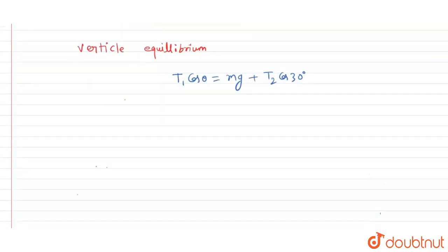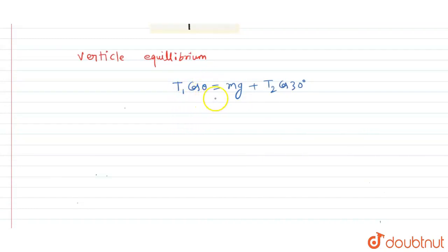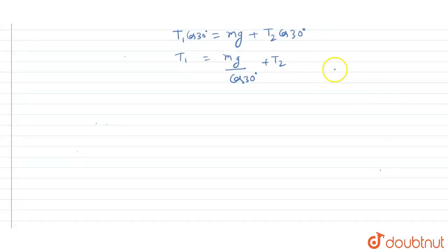So we can easily see that here, if I write T1 cos of 30, so this will be, this can be written as T1 is equals to mg upon cos of 30 plus T2. So clearly from equation 2, from equation 2, we can easily make a judgment.